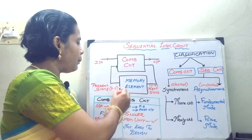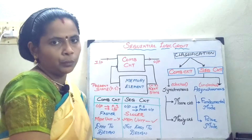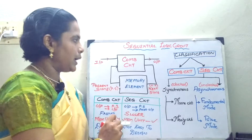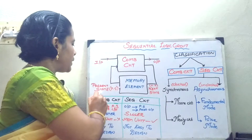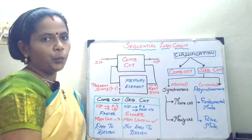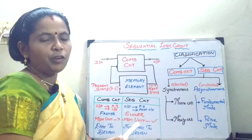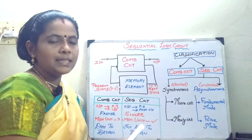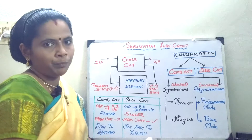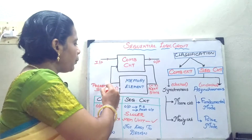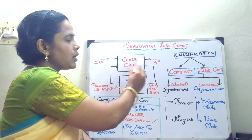When memory elements are included, it becomes a sequential circuit. In this case, your output depends on the present state and the input. This memory element can be a flip-flop. A flip-flop is a memory element which can store either 0 or 1. Depending upon your past state, it is going to continuously change.